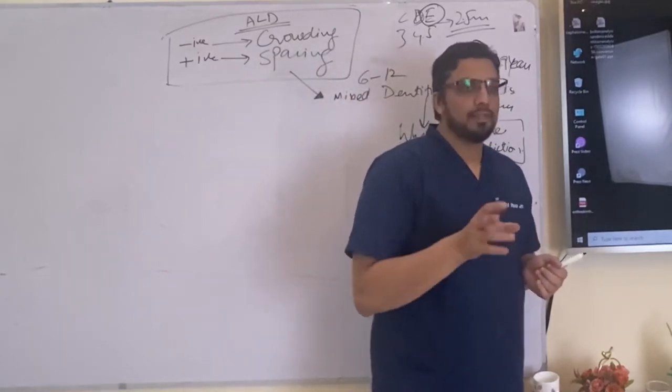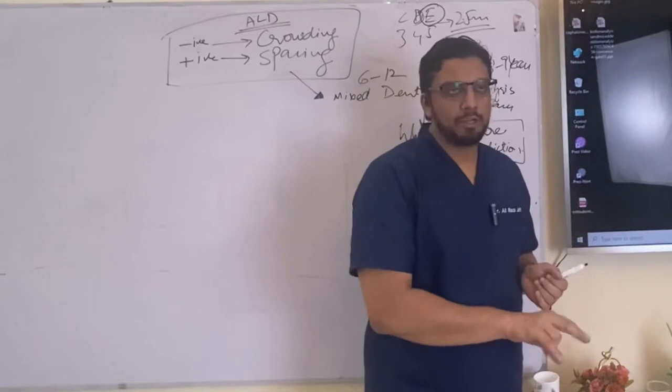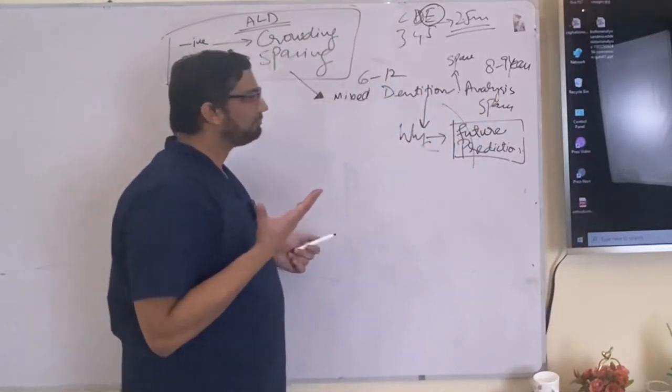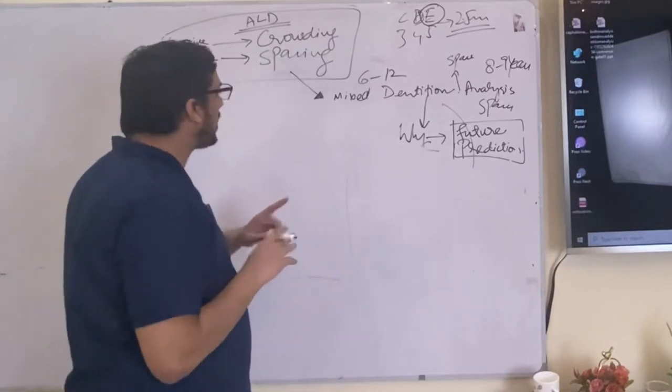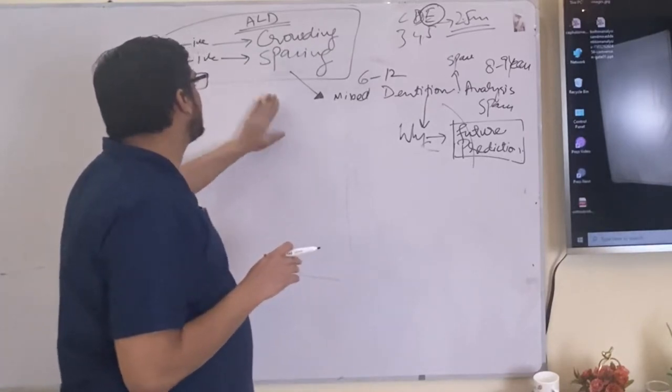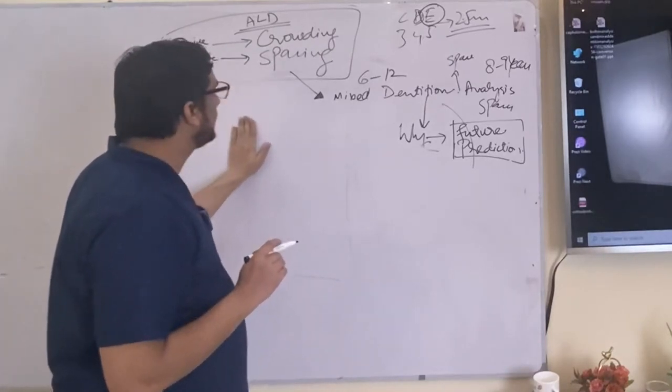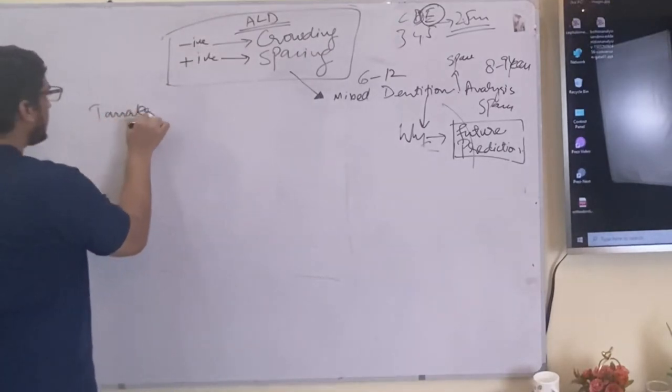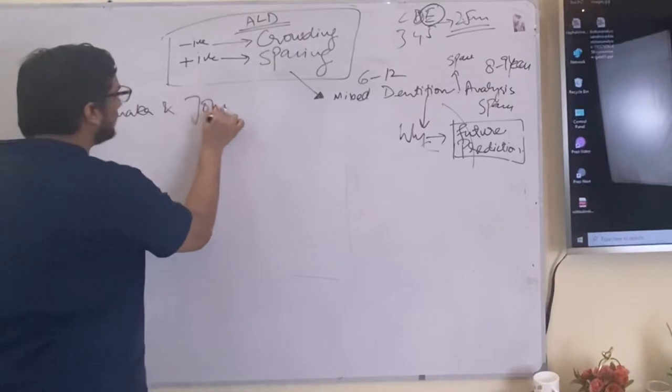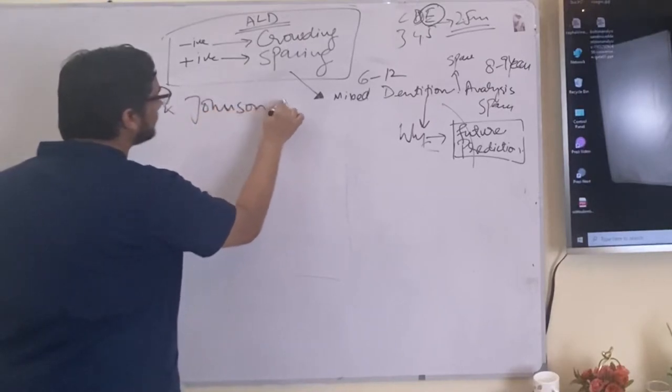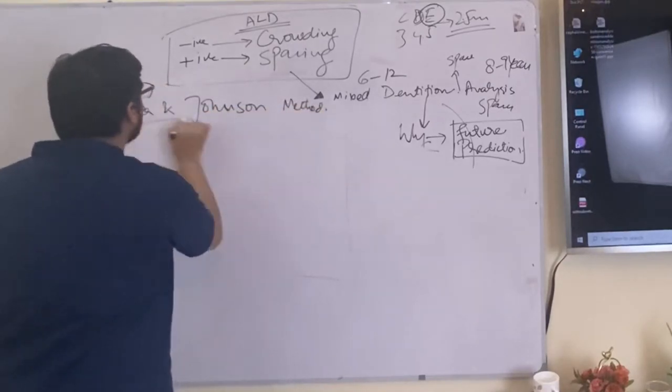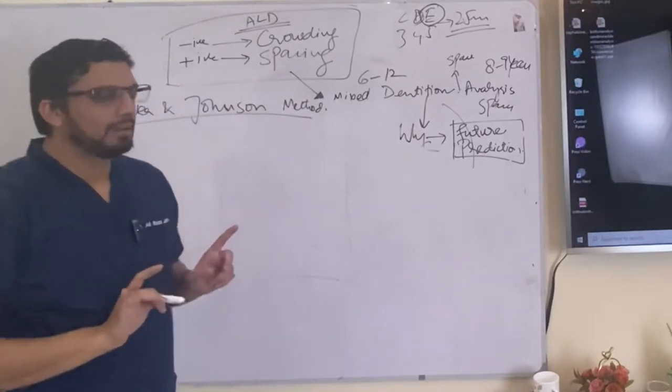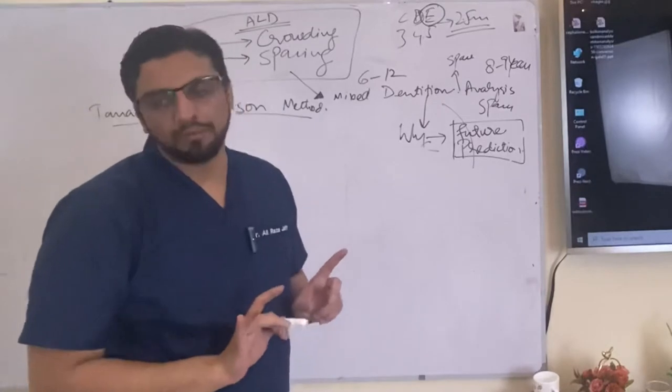In the Moyst, the issue is the difficulty of application in our population and the presence of the chart available for you for doing the analysis. Here in the Tanaka and Johnson method all the issues of the previous methodologies have been resolved.